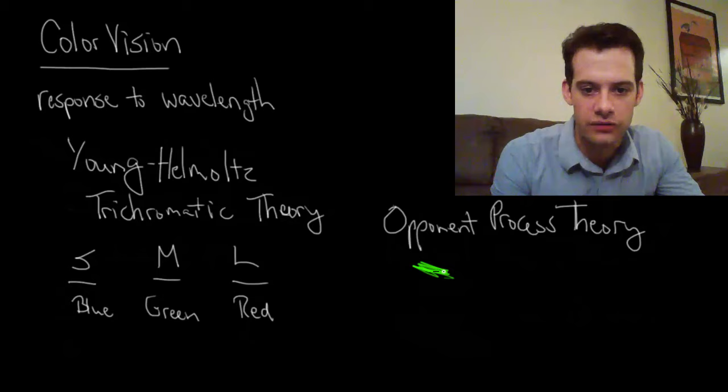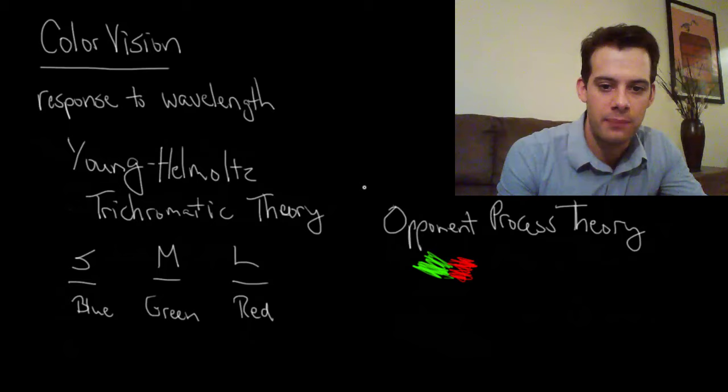So we have these two pairs of colors. We have green and red are a pair that are opposing one another and blue and yellow oppose one another. So the idea that happens in opponent process theory is that when we stare at one color